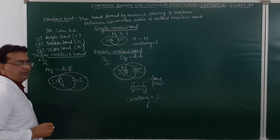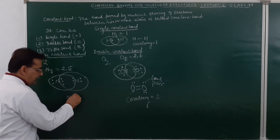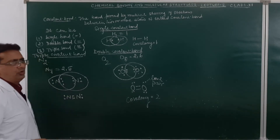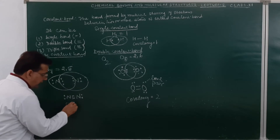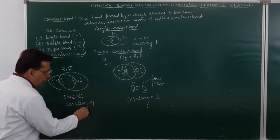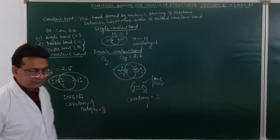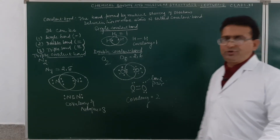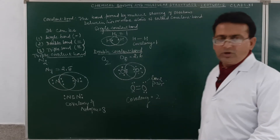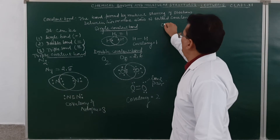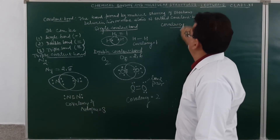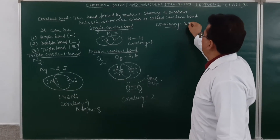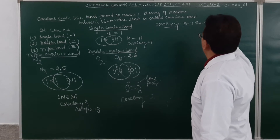As we have done in the lower classes — in class 9th and 10th — a covalent bond can be a single bond, a double bond, or a triple bond. So the types of covalent bond are: single, double, or triple covalent bonds.